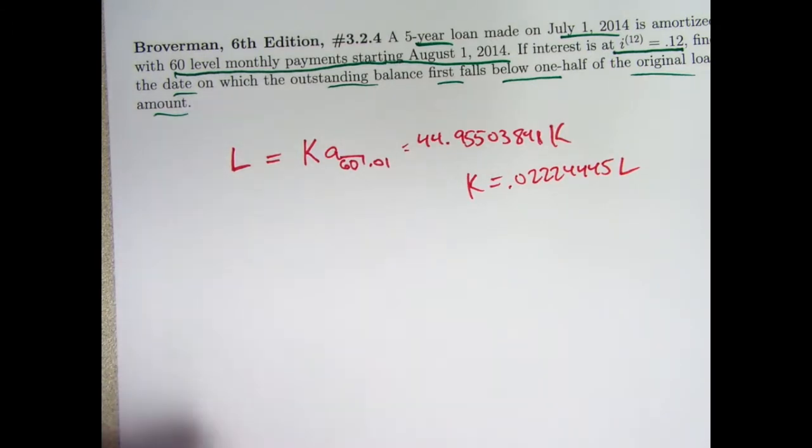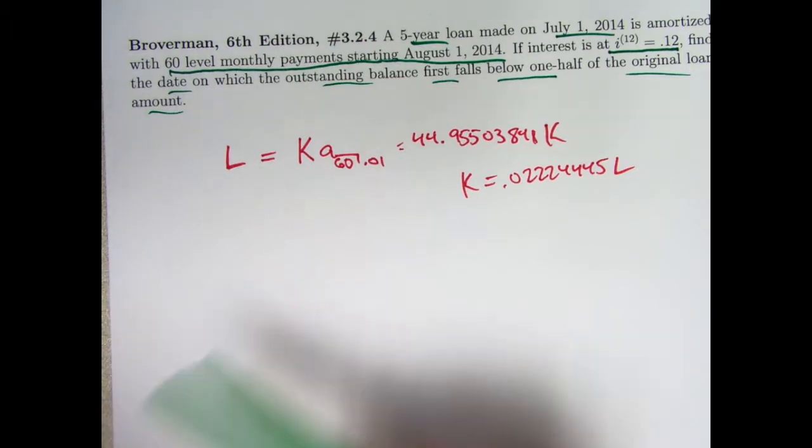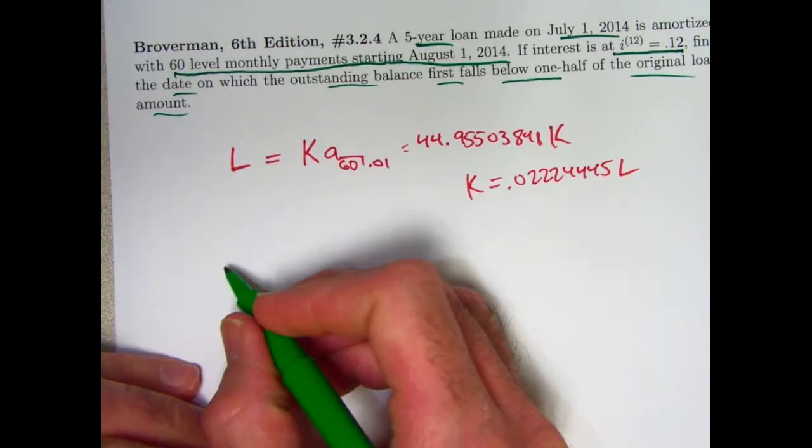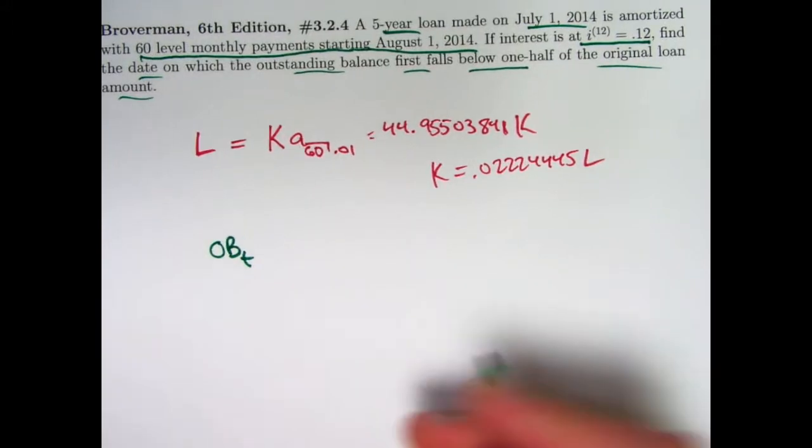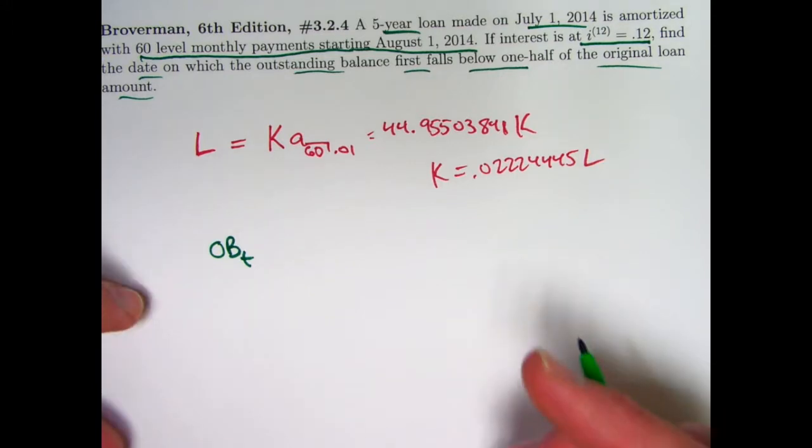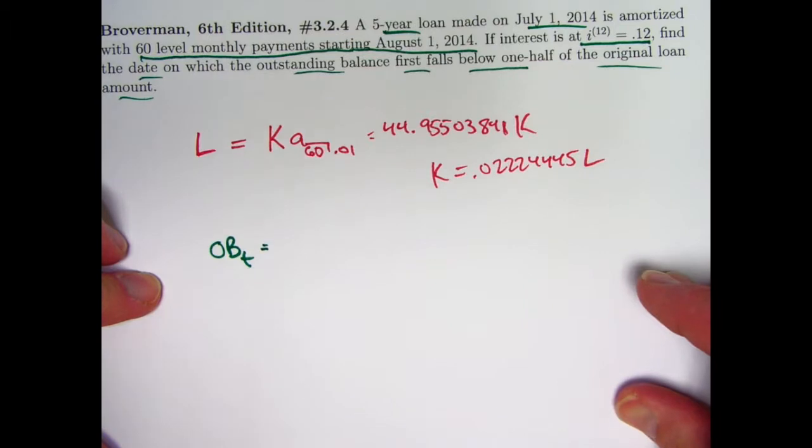When you have this kind of payback scheme, 60 payments worth, a periodic interest rate of 1%. All right. So when can we figure out what time it will take until the balance is half of L? The outstanding balance in general can be found either with the prospective or retrospective methods. I think it will be simpler to think prospective here, to think of this as the present value of all the remaining payments.